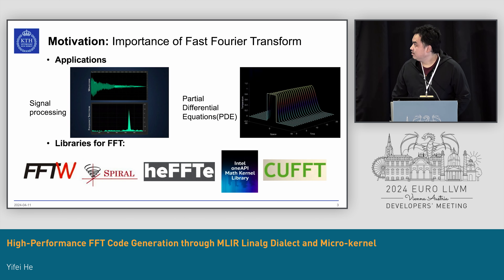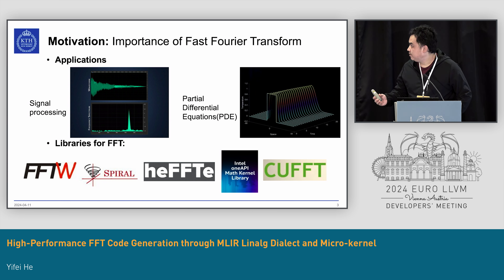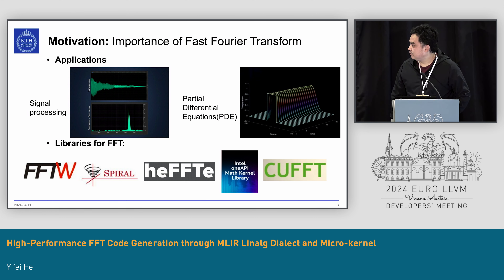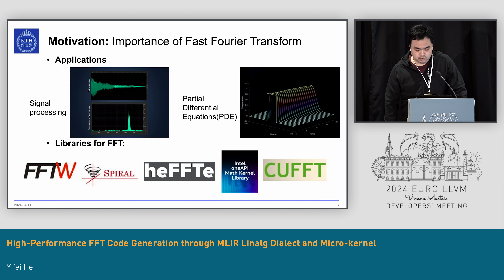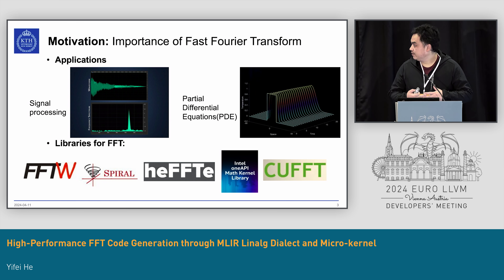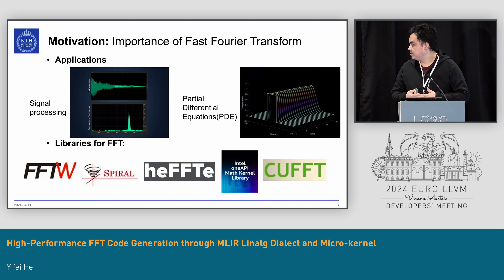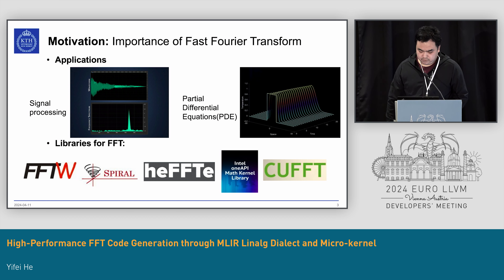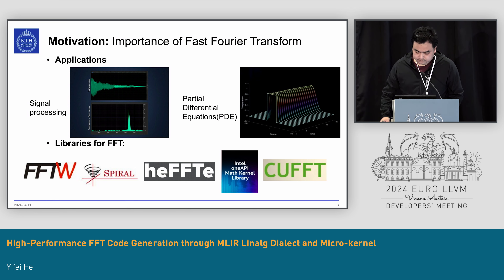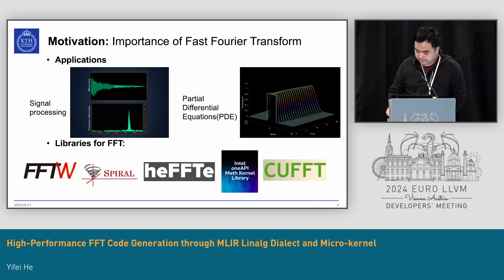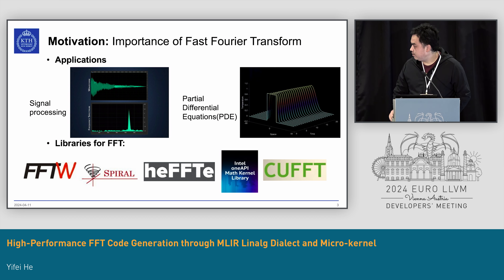FFT, which is short for the Fast Fourier Transform, is an important part of many applications in high performance computing. In signal processing, we can use FFT to transform signals between the frequency domain and the time domain. In numerical analysis, we can use FFT to solve partial differential equations. There are many successful FFT libraries available, such as FFTW, Spiral, and also FFT libraries offered by vendors such as Intel and NVIDIA.